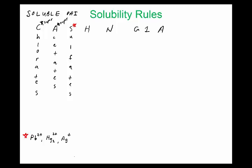You'll see that these three metal ions are also exceptions for halides. Another exception for sulfates is group 2 below calcium, meaning calcium sulfate, strontium sulfate, and barium sulfate are insoluble.